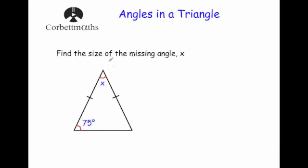This question says find the size of the missing angle X. We've got an isosceles triangle with X at the top, two little lines showing it's isosceles, and a 75 degree angle at the base. Isosceles triangles have two equal sides, and also the base angles are equal — so this angle will be the same as this angle. We know both base angles are 75 degrees.